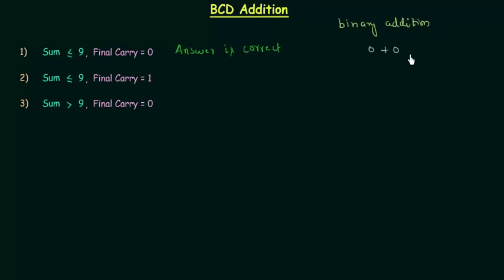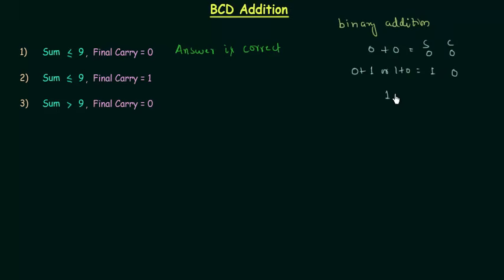If we add 0 and 0, the sum is going to be 0 and carry is going to be 0. If we add 0 and 1, or 1 and 0, sum is going to be 1 and carry is going to be 0. And the most important case: when we add 1 and 1, sum is going to be 0 and carry is going to be 1. This is all for binary addition, and we have to use binary addition in BCD addition.